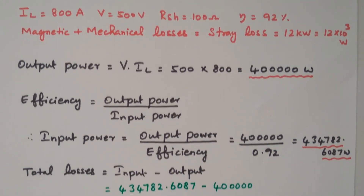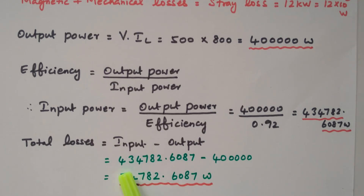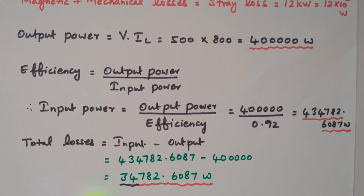From the input power and output power, we can easily calculate the total losses. Since input = output + losses, we get: total loss = input − output = 434,782.6087 − 400,000 = 34,782.6087 watts.